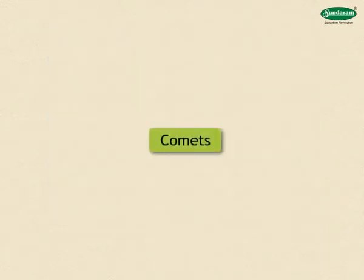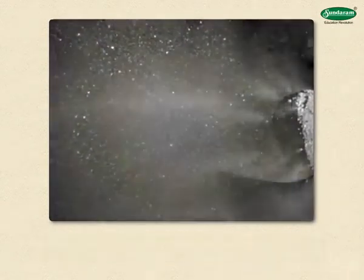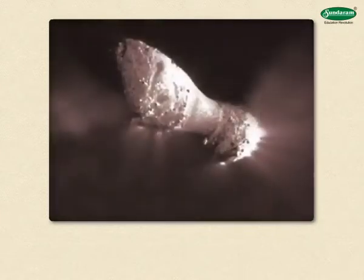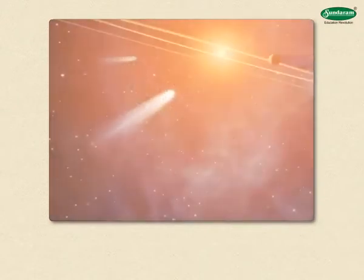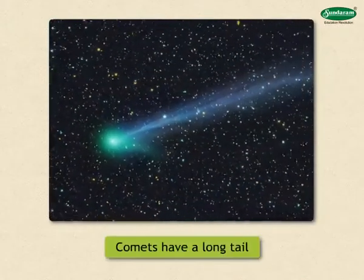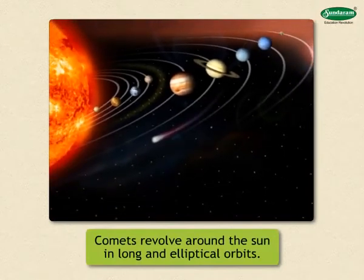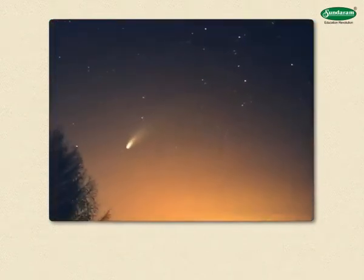Now let us study about comets. Comets are made up of frozen matter and dust particles. Due to the heat of the sun, the matter in the comet turns into gases. These gases get thrown in the direction away from the sun. That is why some comets appear to have a long tail. Comets revolve around the sun, but as their orbit is long and elliptical, we can see them in the sky only occasionally after long periods.